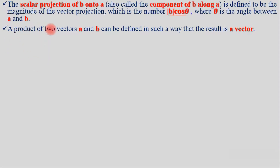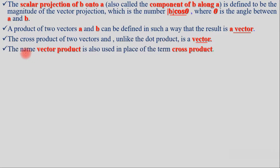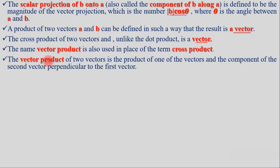The product of two vectors can also be defined in a way that the result is a vector — this is called the vector product or cross product. Unlike the dot product, the cross product of two vectors is itself a vector. The vector product of two vectors is the product of one vector and the component of the second vector perpendicular to the first.